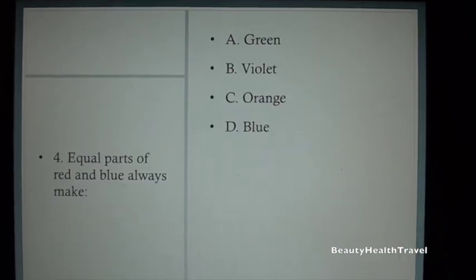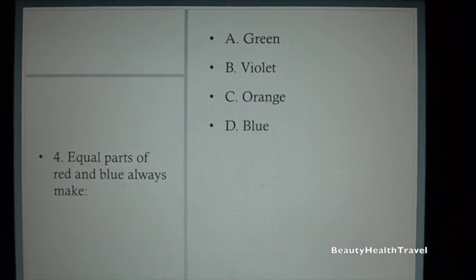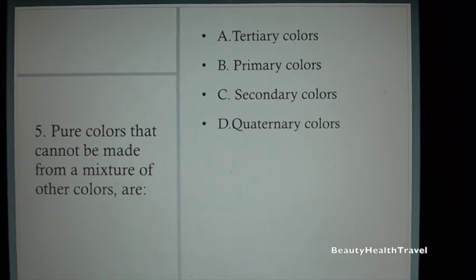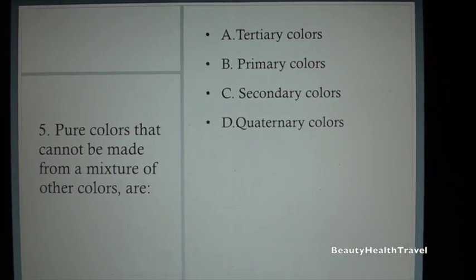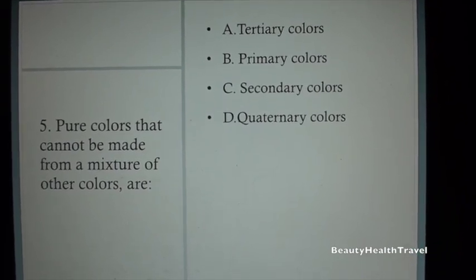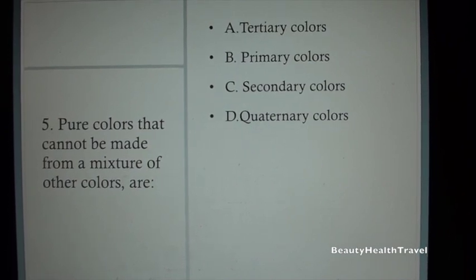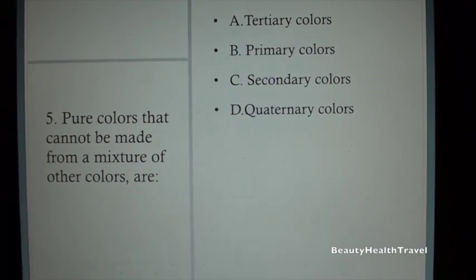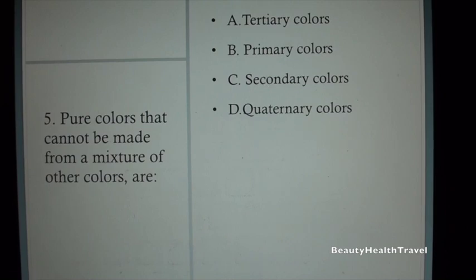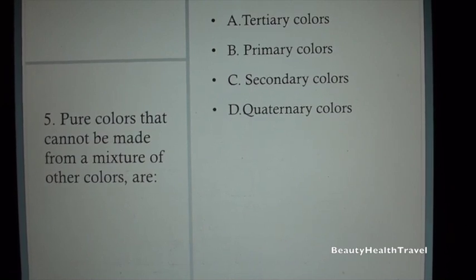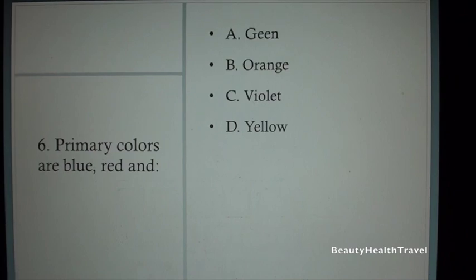A. Green, B. Violet, C. Orange, D. Blue. Question 5: Pure colors that cannot be made from a mixture of other colors are: A. Tertiary colors, B. Primary colors, C. Secondary colors, D. Quaternary colors.